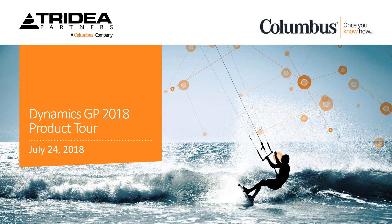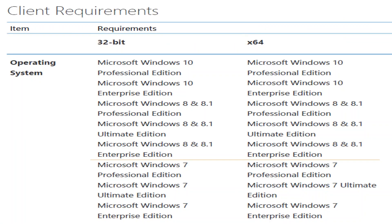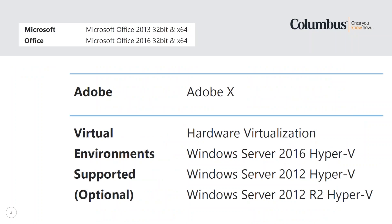If you're going to run GP 2018 in your environment, there are system requirements to be aware of. The biggest thing on the desktop side is that GP runs on any current version of Windows — 7, 8, 8.1, and 10 are all perfectly fine. On the server side, it is able to run in a virtual environment, which is how most people have their servers set up today. Microsoft supports their own virtualization software called Hyper-V.